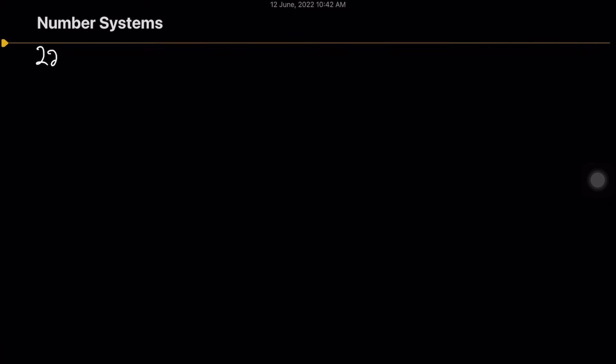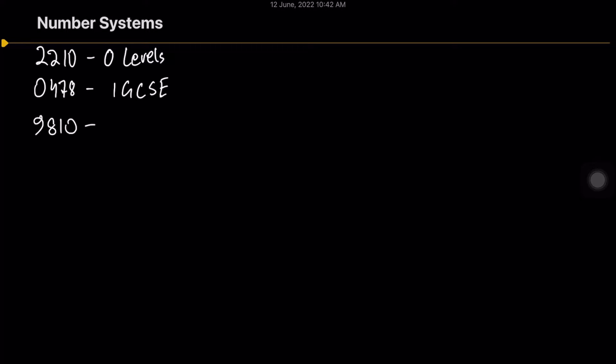Hello, in today's video we're going to be learning about the number system. This chapter will be required for three syllabuses: 2210 for O Levels, 0478 for IGCSE, and the 9816 syllabus for A Levels. So without any further ado, let's get started.